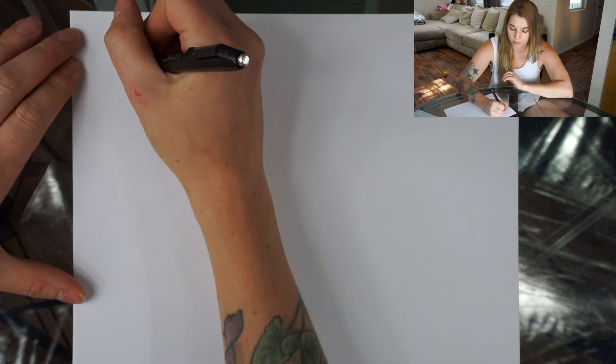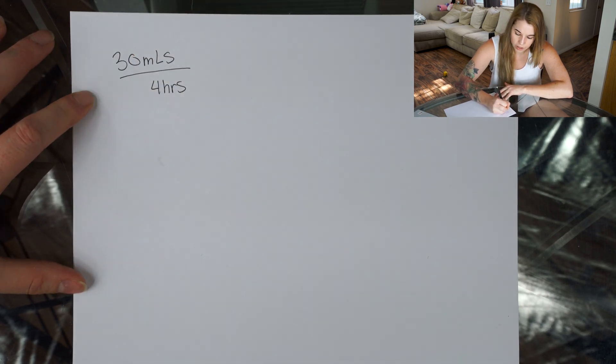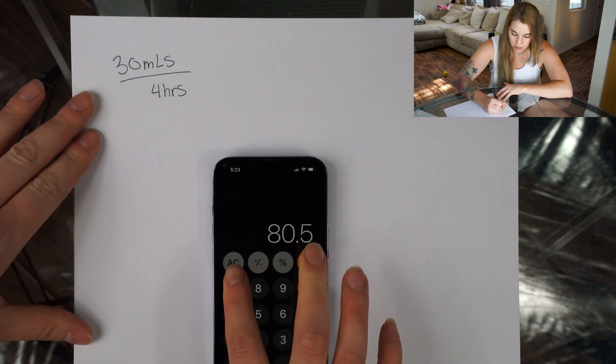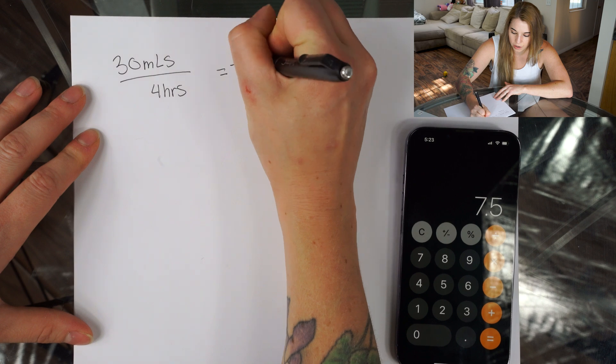Step one: know how many mils you're administering and over how long. We're going to pretend we're giving Dobby a blood transfusion. Cat packed red blood cells are usually 20 to 30 mils per unit, so we're going to say we're giving Dobby a 30 mil blood transfusion over four hours, which is a pretty traditional standard rate. So first we break down total mils over total hours to get our hourly rate.